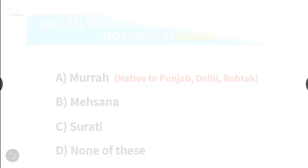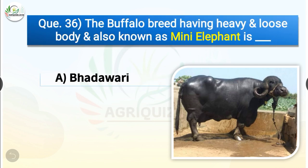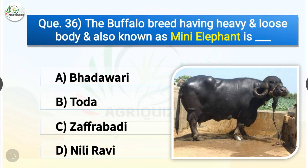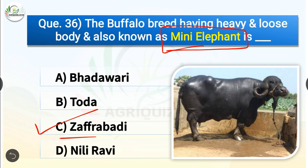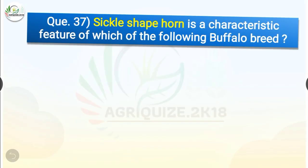Question number 36. The buffalo breed having a heavy and loose body and also known as mini elephant is dash. The options are Bhadawari, Toda, Zafarbadi or Nili-Ravi. The correct answer is option C, Zafarbadi. So the buffalo breed known as mini elephant is Zafarbadi, whereas Bhadawari has the highest fat percentage of about 13%.